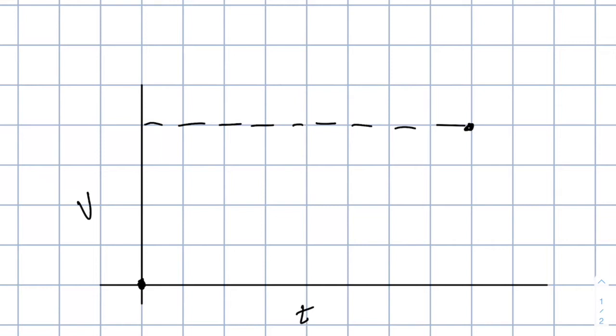It probably doesn't surprise you then that the shape of the graph is just basically an upside-down exponential decay. Here the capacitor is charging up very fast at the beginning, but then slows down as it gets to the end.